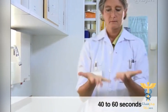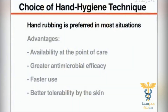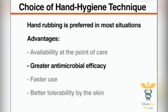Hand rubbing with an alcohol-based formulation is the preferred hand cleansing procedure in most clinical situations. The main advantages over soap and water include availability at the point of care, greater antimicrobial efficacy, faster use, and better tolerability by the skin.